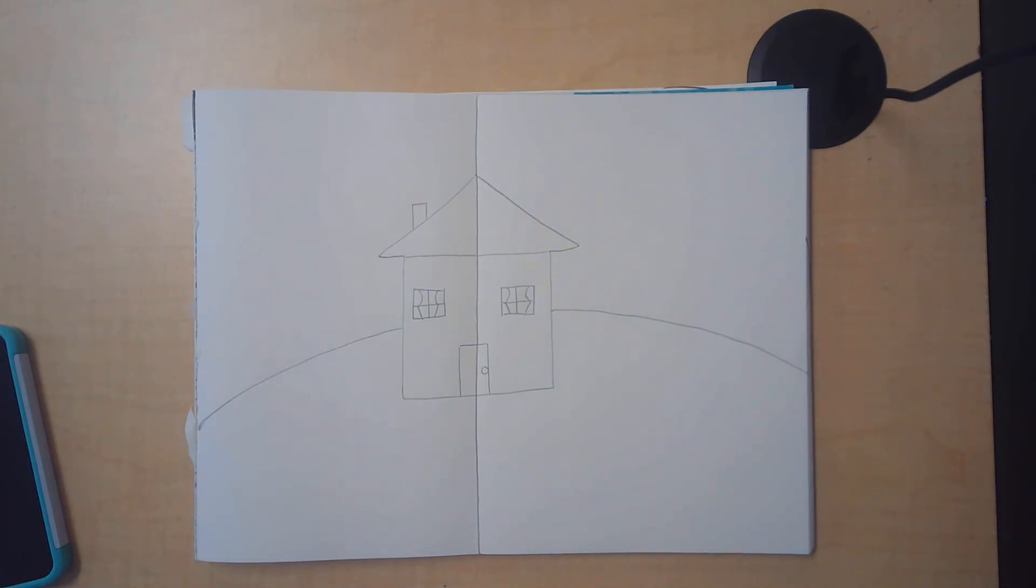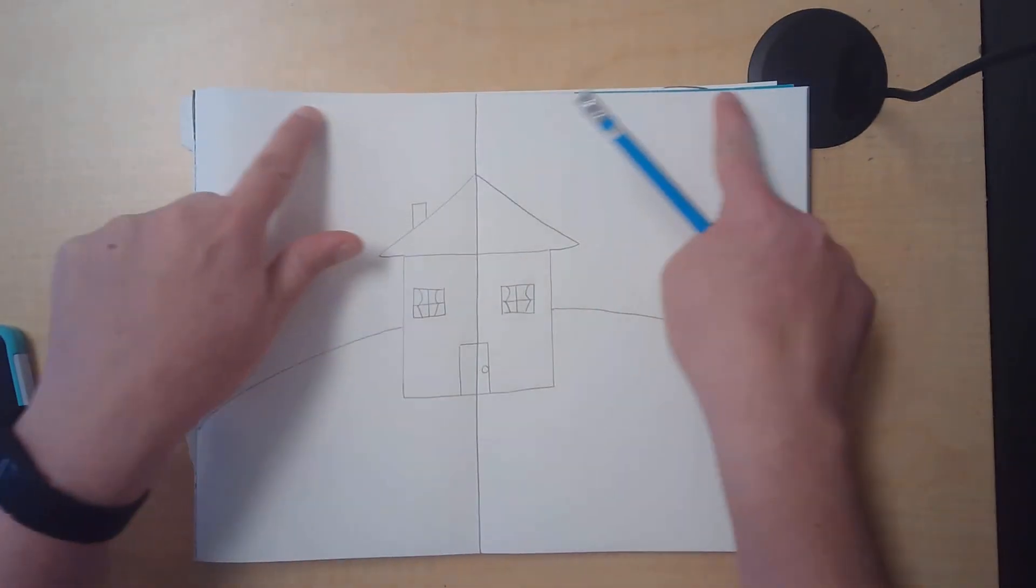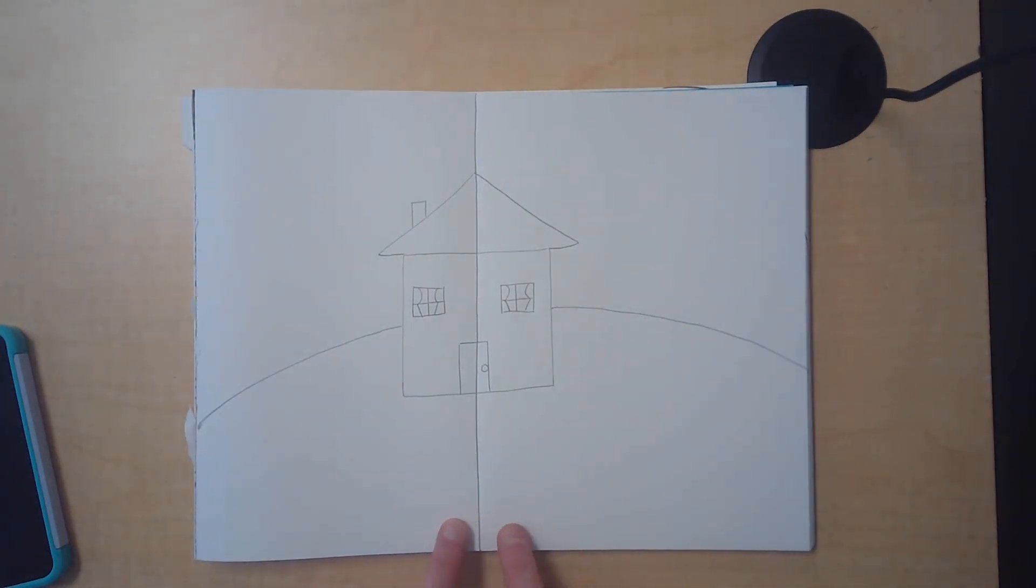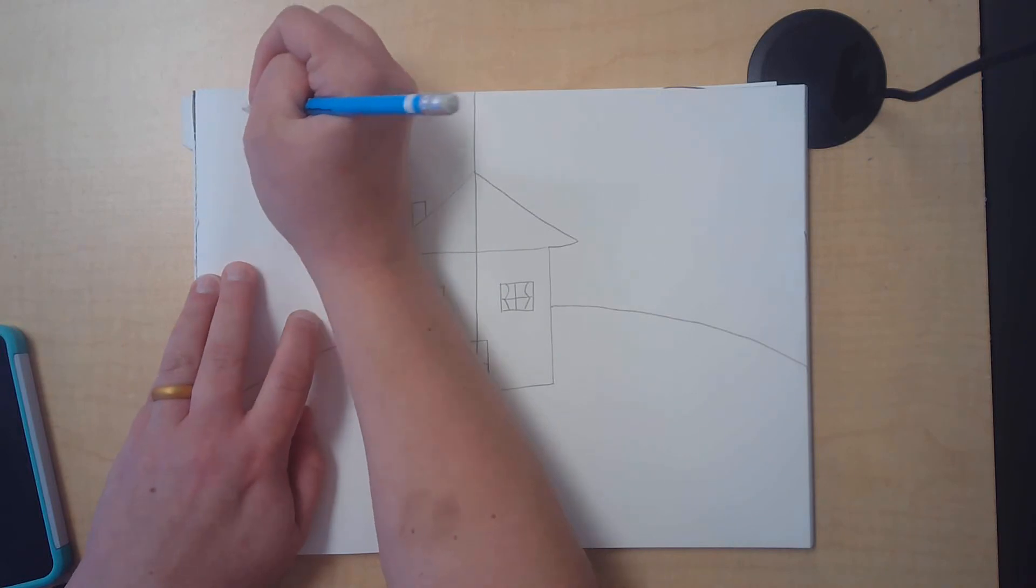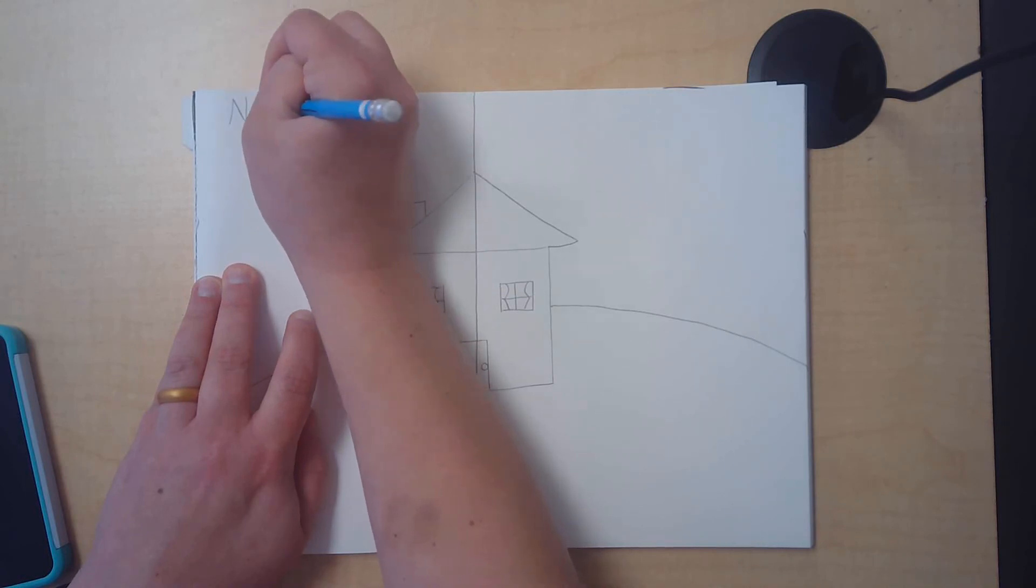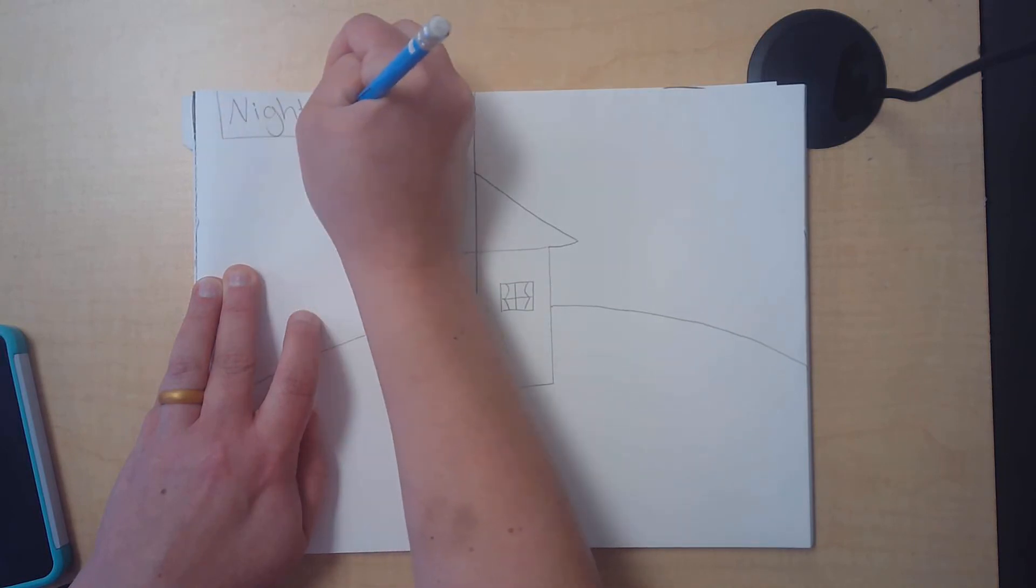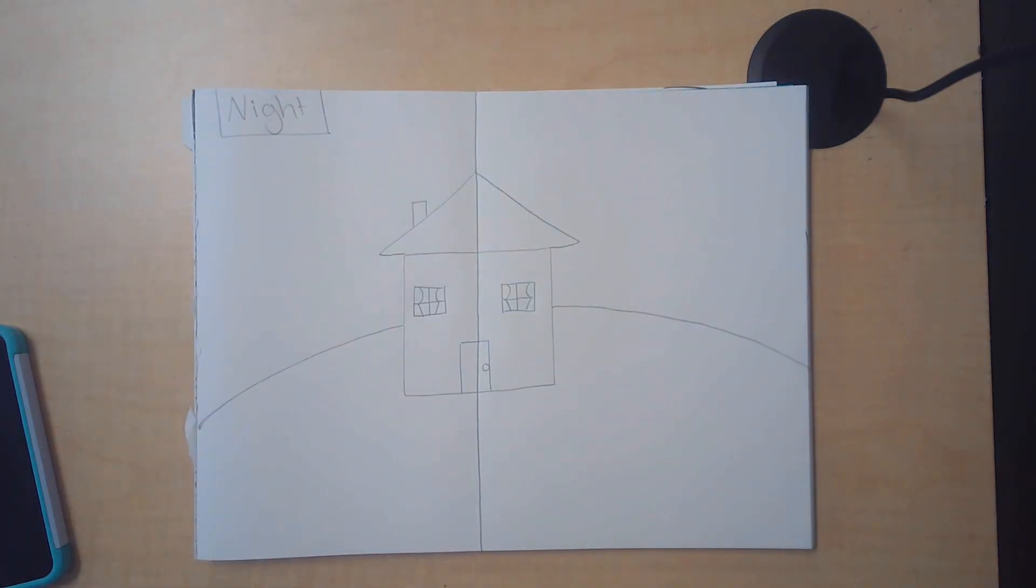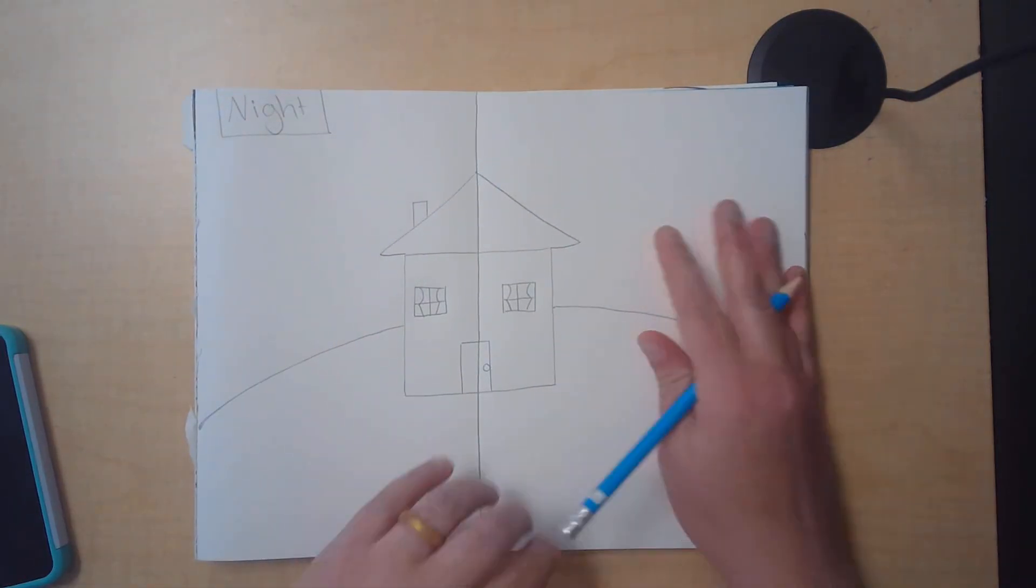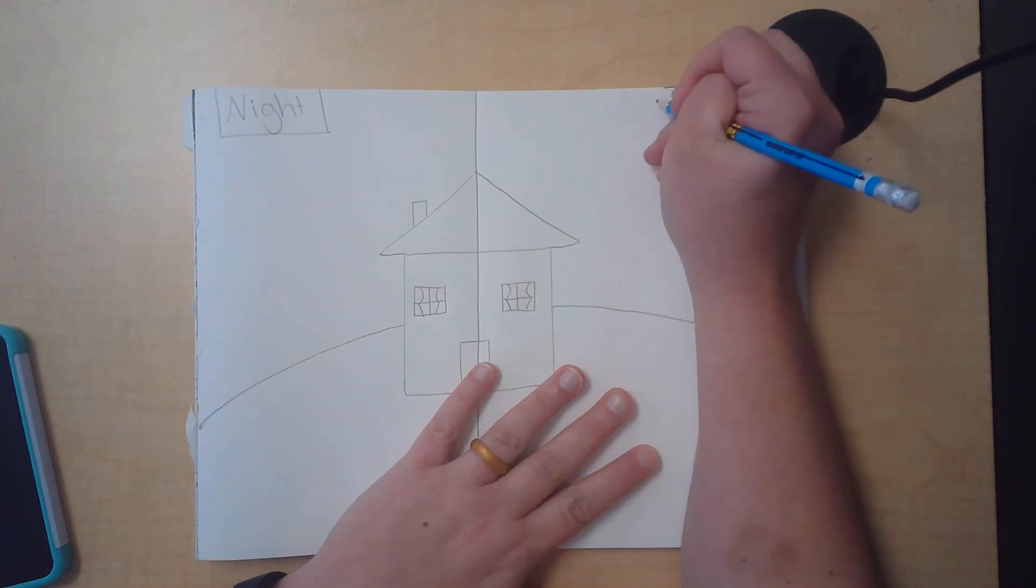We're going to need some labels in this drawing. You can put your labels up high in the sky or down low on the ground, whichever you prefer. One side of our beautiful landscape we're going to label it night. The other side of our beautiful landscape we're going to label that side day.